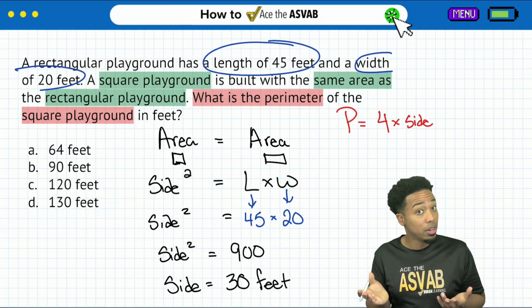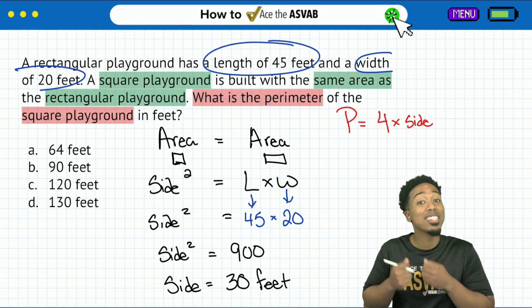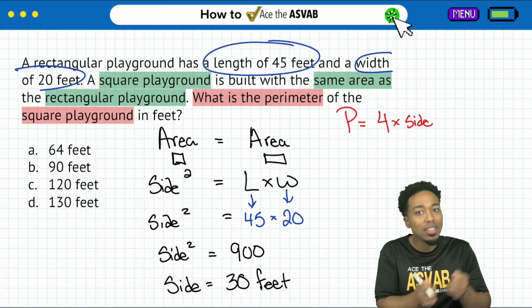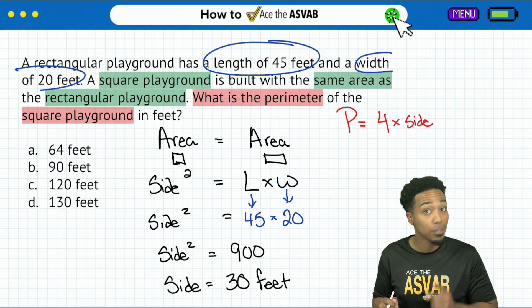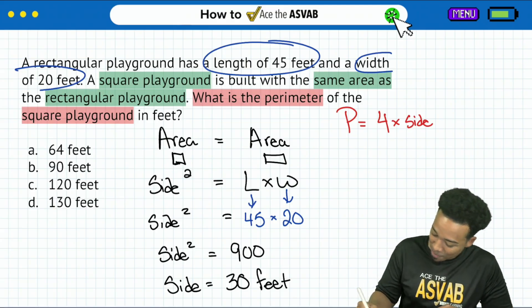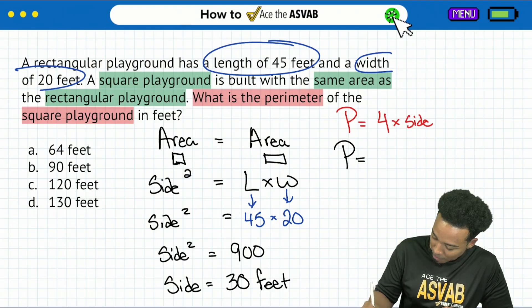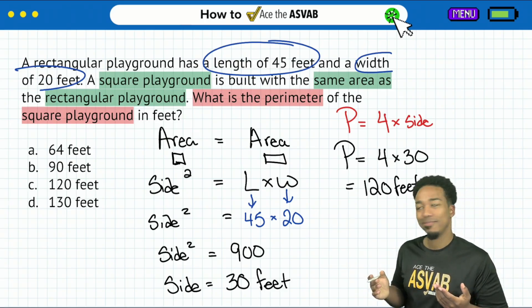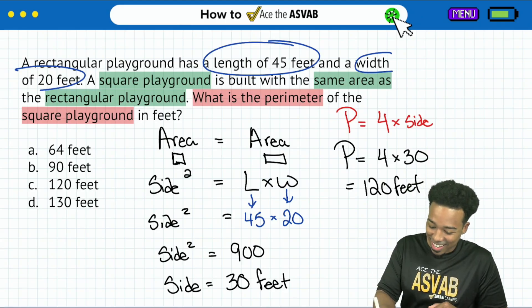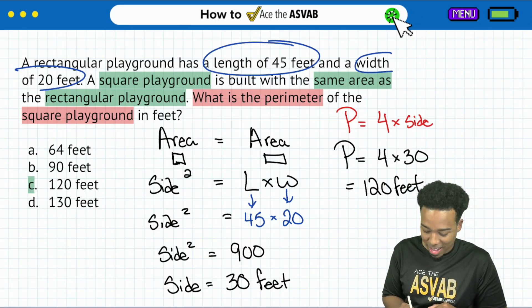So boom, those areas are equal. So the area of the square has to be 900. Let's work backwards here. What's the square root of 900? What times itself gives you 900? That's going to be 30. 3 times 3 is 9. Bring those zeros back, and that's 900. So the side length, if we take the square root of both sides, will be 30 feet. But are we done? No. We have the side of the square. We need to put that into the perimeter formula to get the perimeter.